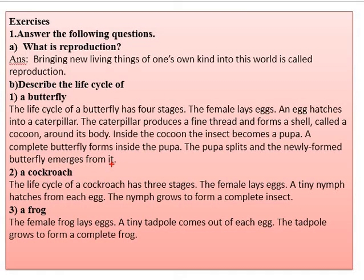Number two is a cockroach — the life cycle of a cockroach. There are three stages. The female lays eggs. Then a tiny nymph hatches from each egg. The nymph will grow to form a complete insect — that is, a cockroach. Number three is a frog. The life cycle of the frog is also similar.